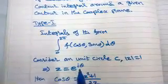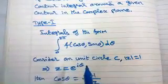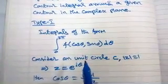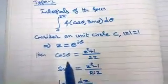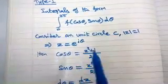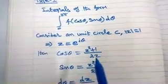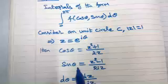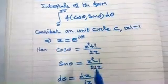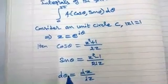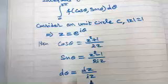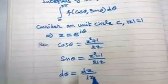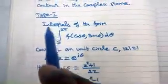From z = e^(iθ), we get cos θ = (z² + 1) / 2z, sin θ = (z² − 1) / 2iz, and dθ = dz / iz.